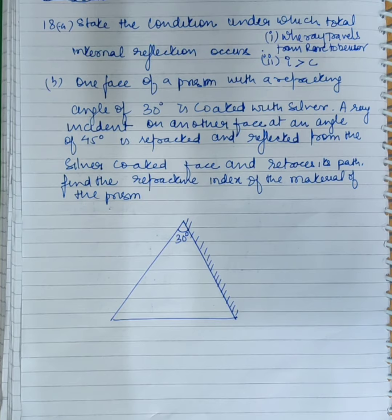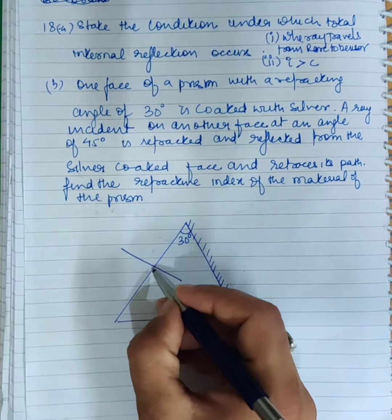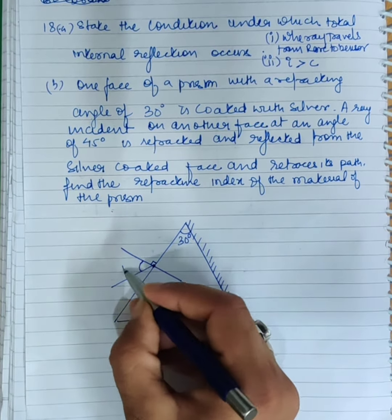A ray is incident on another surface at an angle of 45 degrees. The normal is perpendicular to the surface, and the angle is 45 degrees.